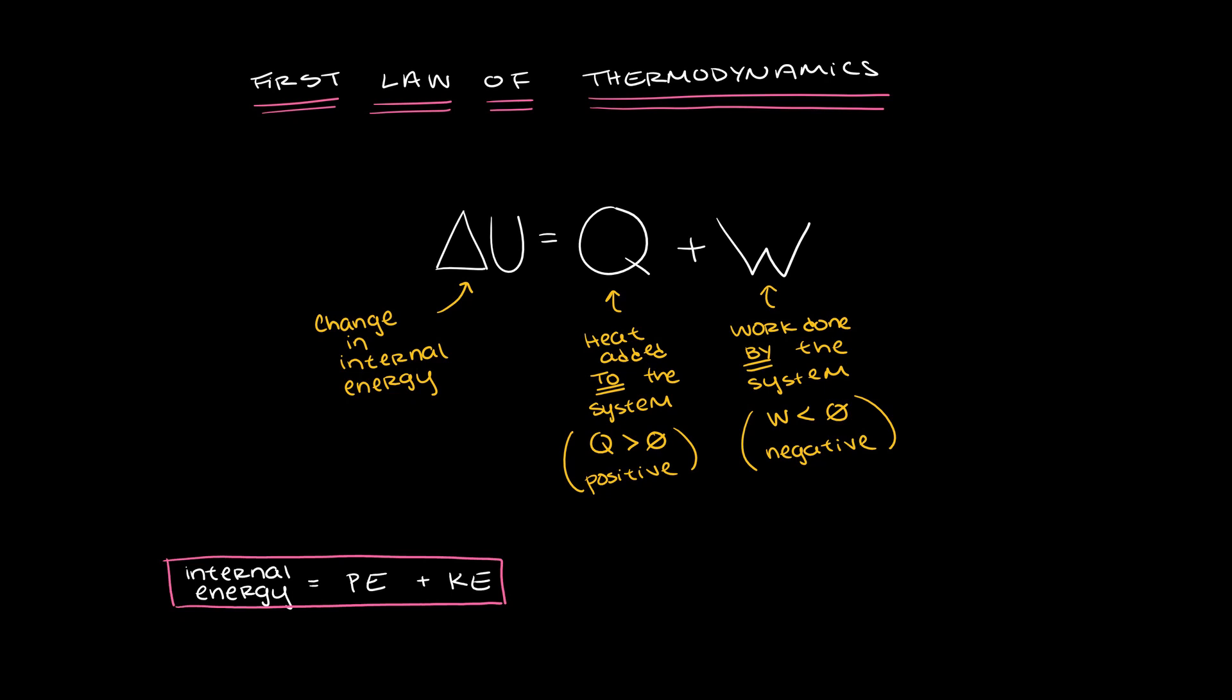To do so, let's talk about the components of the first law of thermodynamics: internal energy, heat, and work. Internal energy in a closed system is the sum of potential and kinetic energy in a system. The first law of thermodynamics states that the change in internal energy is equal to the heat changes in the system and the net work done by or to the system.